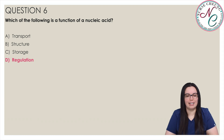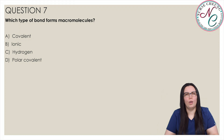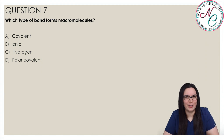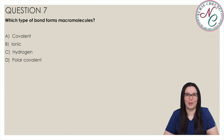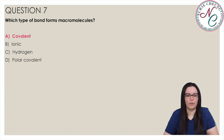The functions of nucleic acids include heredity and regulation. Question 7: What type of bond forms macromolecules? Is it A) Covalent, B) Ionic, C) Hydrogen, or D) Polar Covalent? The correct answer is A) Covalent. Macromolecules are formed by covalent bonds between monomers.